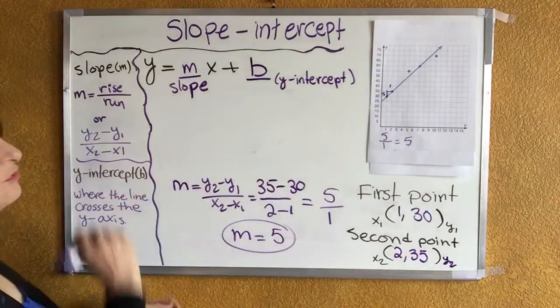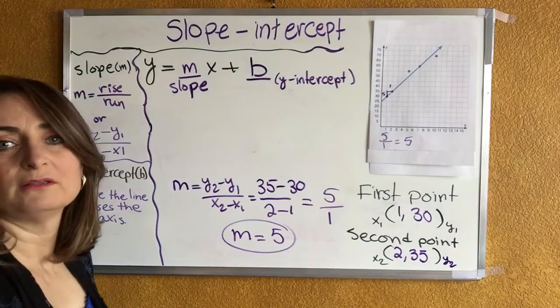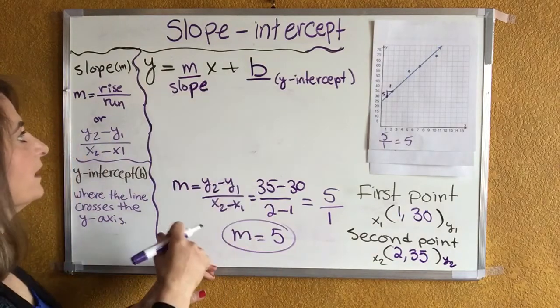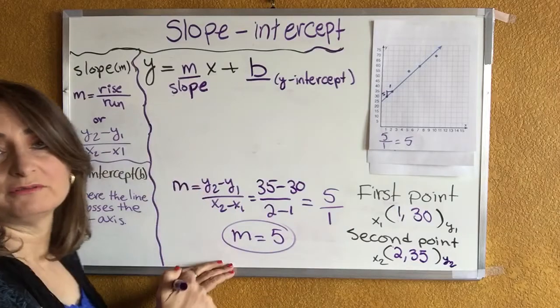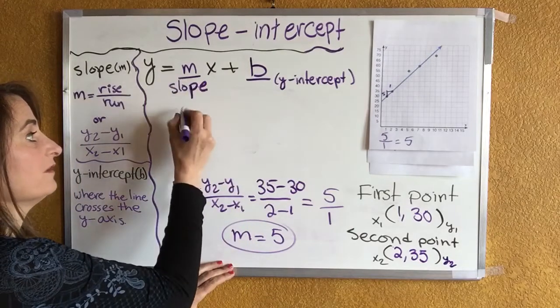So you can perform the rise over run or the two points from the line. Now that I found the slope, substitute the value of the slope in the equation. Instead of m, I'm going to write 5.